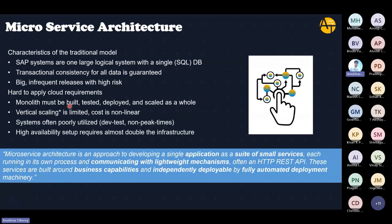Vertical scaling is limited and the cost is non-linear. You cannot say that a particular module, class, or program can run fast — you cannot. If you want, you have to allocate more computing power to the entire system, to the entire hardware. And even then, there is no guarantee that you'll get good performance.